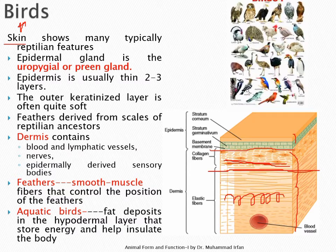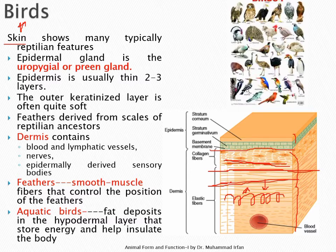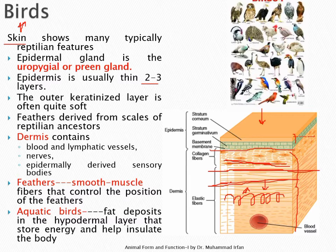Elastic fibers behave like springs — they recoil when stretched but are not as strong and can break. So collagenous fibers provide strength and elastic fibers provide elasticity to the skin. In birds, unlike reptiles, the epidermis is only 2 to 3 cell layers thick and is thinner. The outermost layers are keratinized but not heavily so — they remain relatively soft.